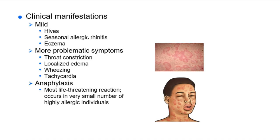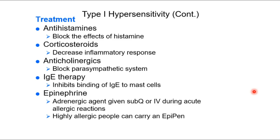Clinical manifestation of type 1 hypersensitivity ranges from mild to moderate to severe, with severe being anaphylaxis — a widespread systemic inflammatory response where your body is trying hard to address the allergen but does so systemically. Treatments include antihistamines, corticosteroids, anticholinergics, IgE therapy, and epinephrine — which is why people carry an EpiPen.